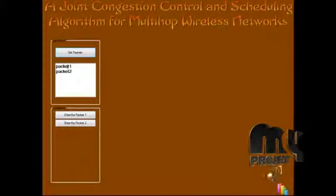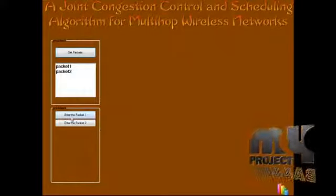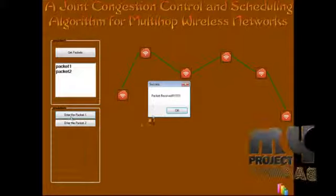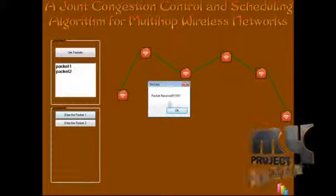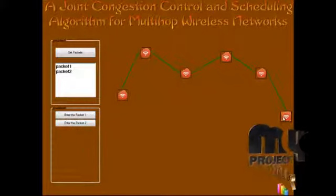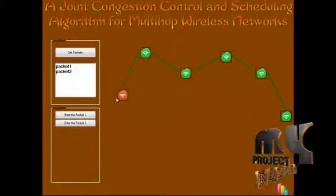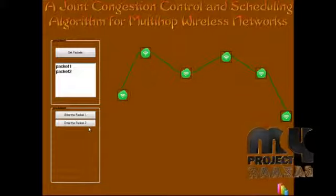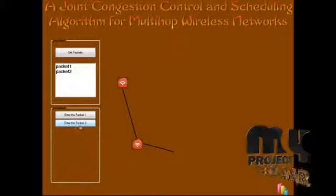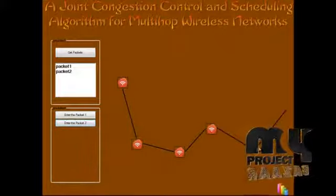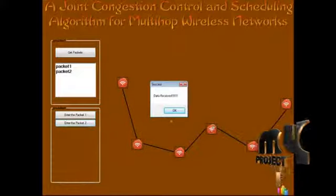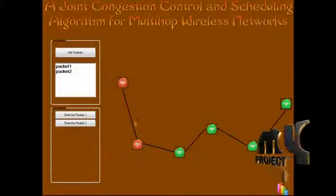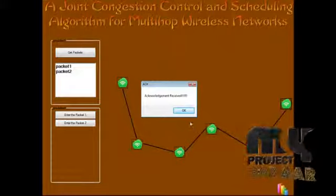Clicking get packets shows the number of packets to transmit. When we click enter packet 1, it injects the packet into the network and the packet is transmitted through the nodes. When the packet is received at the destination node, a packet received message is shown. Clicking the destination node sends the acknowledgement back to the source node. When the acknowledgement is received, we can see the acknowledgement received message. Similarly, we send the second packet by clicking enter packet 2. The destination receives packet 2 and the data received message is shown. Clicking the destination node again sends the acknowledgement back along the same path.